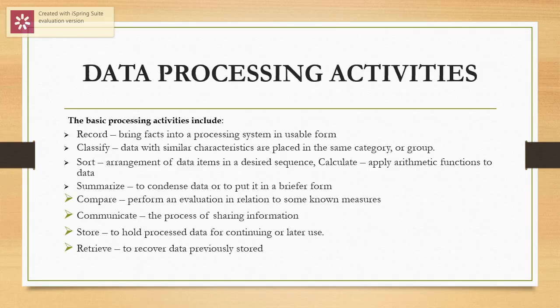Data processing activities include: record, which brings facts into a processing system in the user form; classification, where data with similar characteristics are placed in the same category or group; sorting, where arrangement of data items in a desired sequence is made; calculate, that is to apply arithmetic functions to the data; and summarization, which is to condense data or put it in a briefer form.